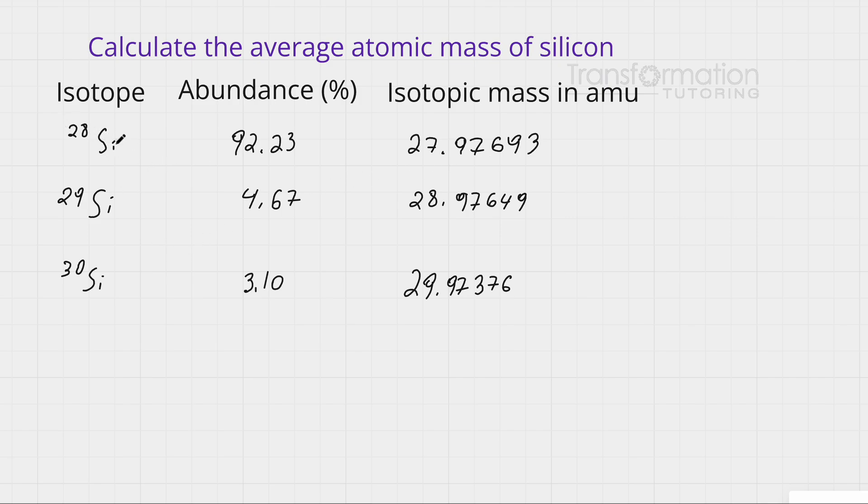We will take its mass, 27.9763 amu (atomic mass units), and multiply it by percent abundance. I will put this percent abundance in decimal form by dividing by 100, bringing the decimal two places to the left. So I will multiply it by 0.9223.